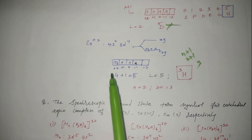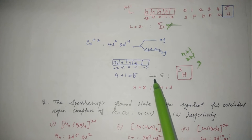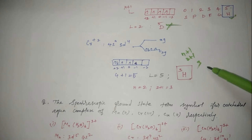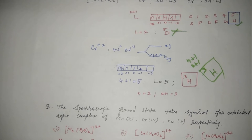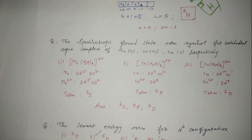With 2 unpaired electrons and spin multiplicity 3, the value of L is calculated as: 2×2=4, 4+1=5, so L=5, which corresponds to term H. The correct answer is ³H. Always keep in mind: when a complex is given, determine whether the ligand is strong or weak before calculating the term symbol.